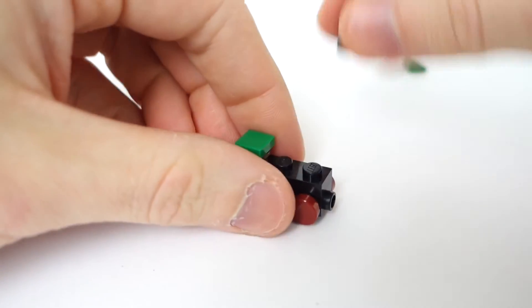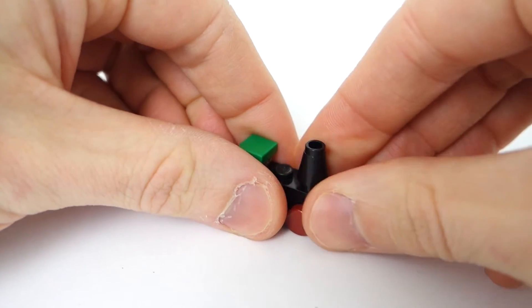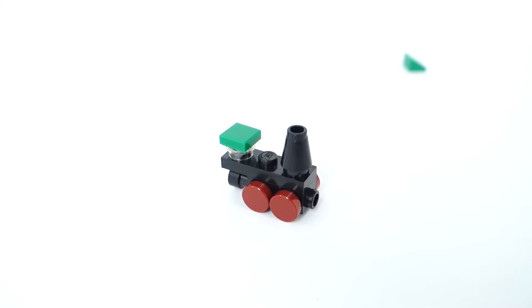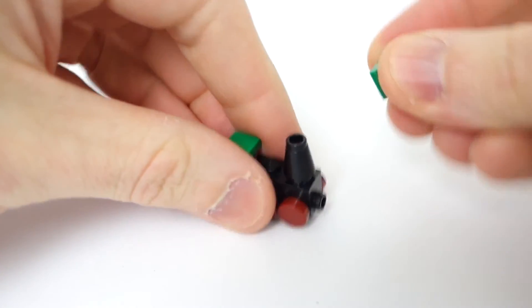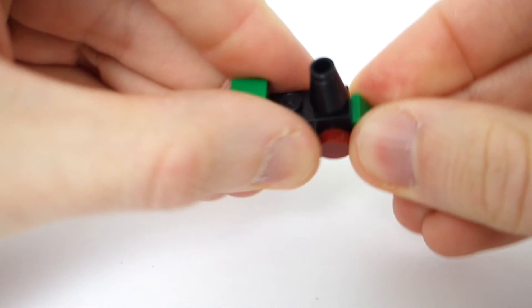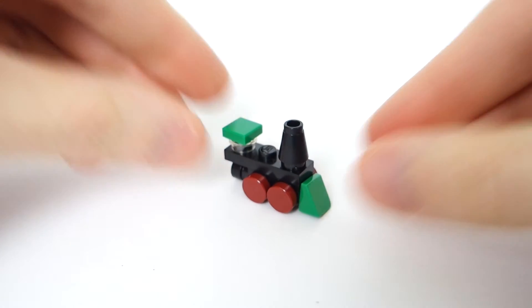Now we got the piece where the smoke comes out of. I'm not sure what that's called on a train, but there you go. They always remind me of like soda cans or something. And then on the front, you have the piece that goes on the front that kind of pushes things out of the way on the train track.